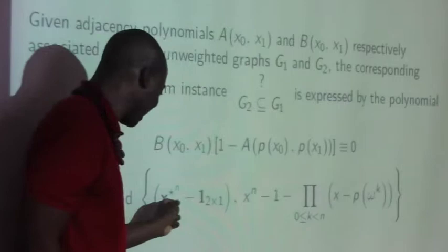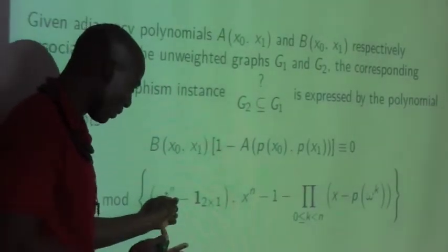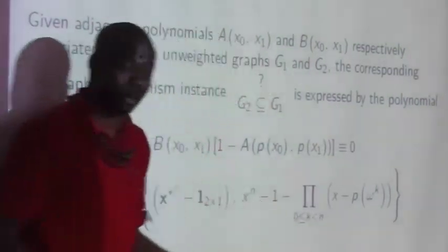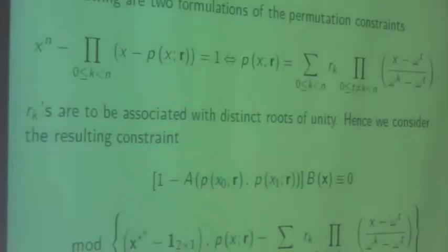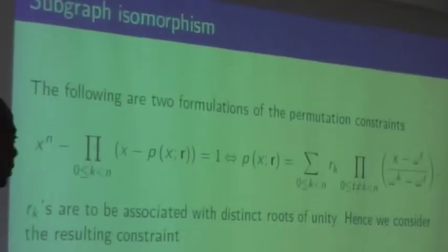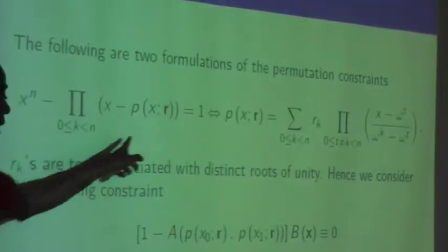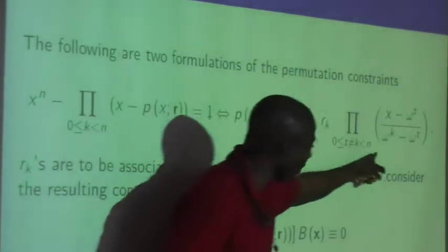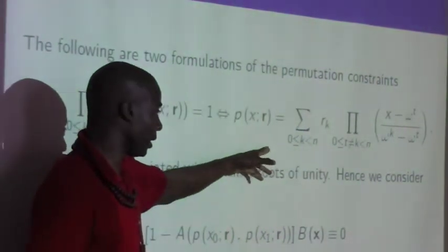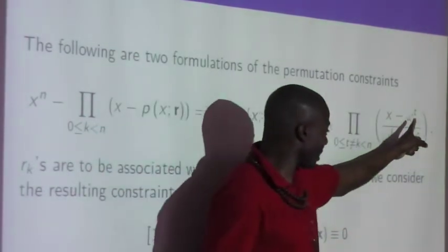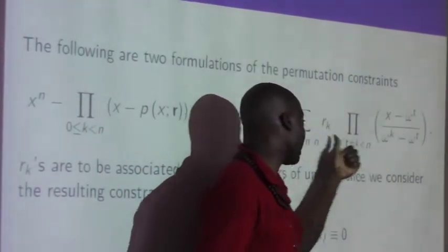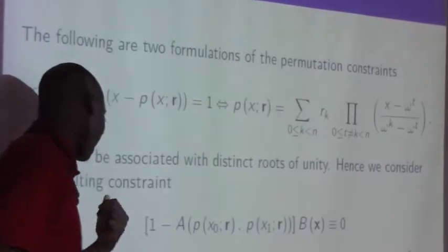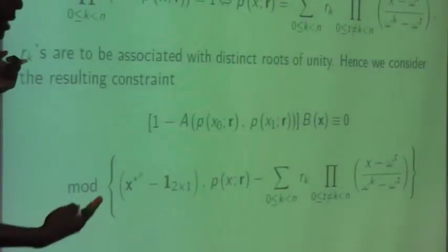The constraints should hold over roots of unity — that is the Hadamard part. P must be a permutation of the roots of unity. Now, to get our algorithms, we change these constraints. It's inconvenient to work with a polynomial where P appears inside, so we write out what P is using the Lagrange interpolation formula: the root W_K, when plugged in, spits out W to the power K, assigning each R_K a distinct root of unity.